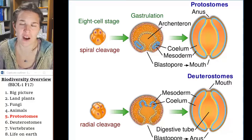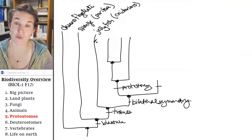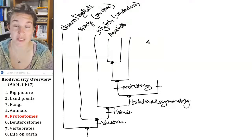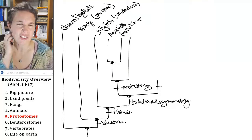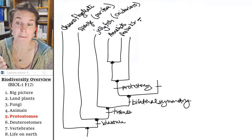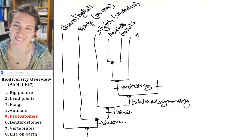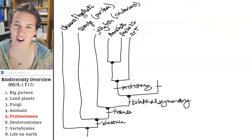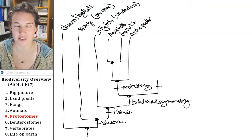So who are these critters that are protostomes? There are three groups. We have the annelids, which are segmented worms. We have the mollusks, which are like clams, oysters, octopi, and squids — squids are cool. And then we have the arthropods. I could do an entire course on each one of these groups — they're so freaking cool.